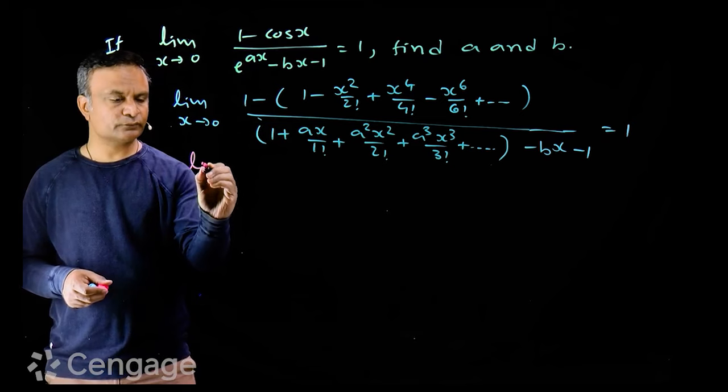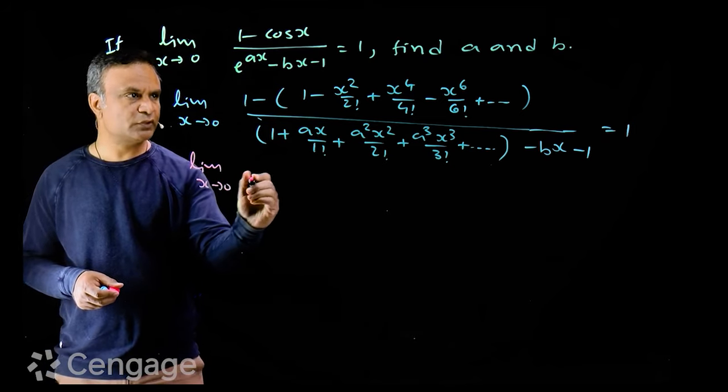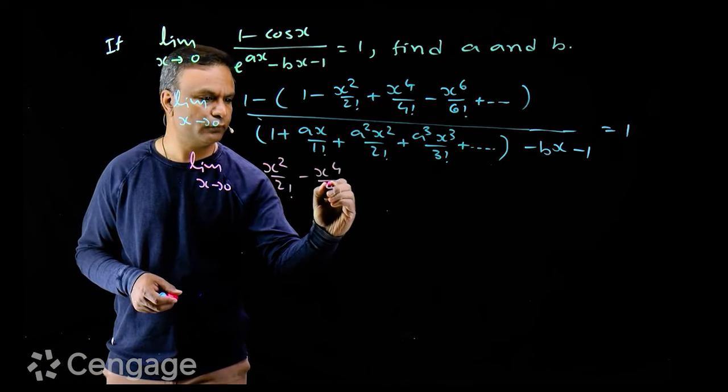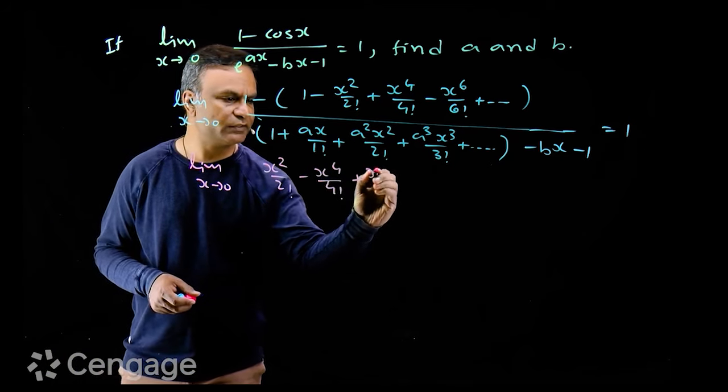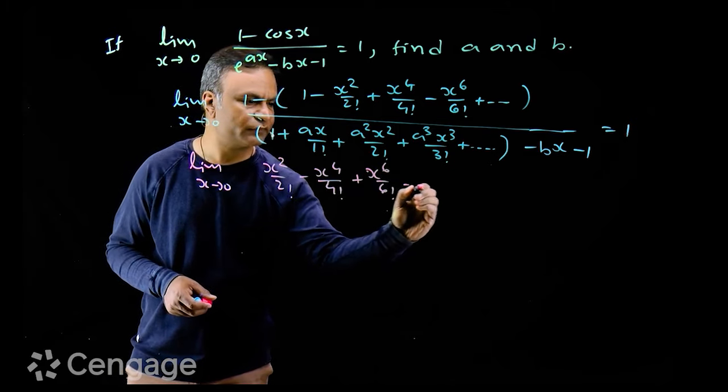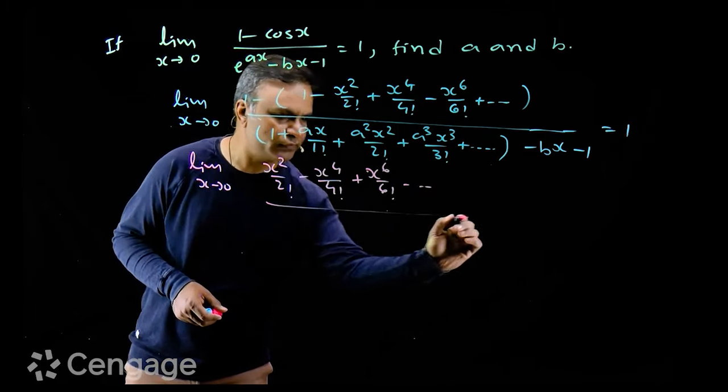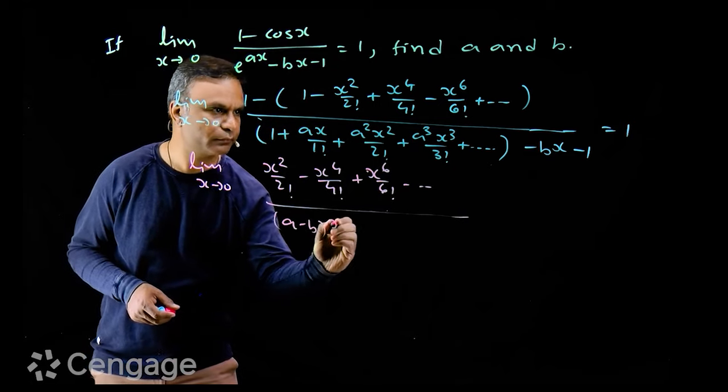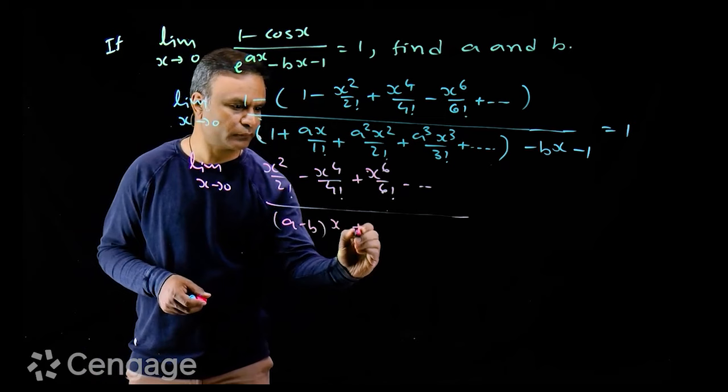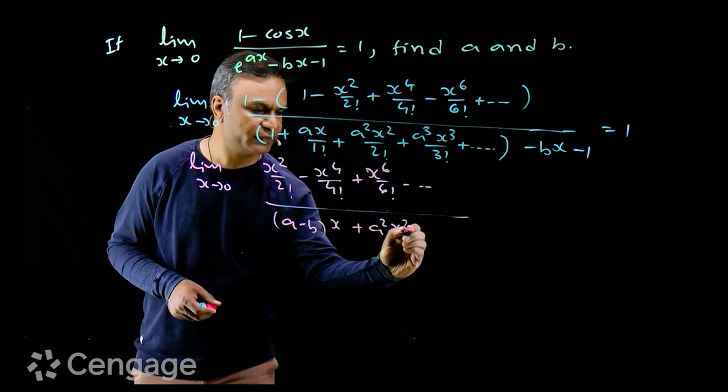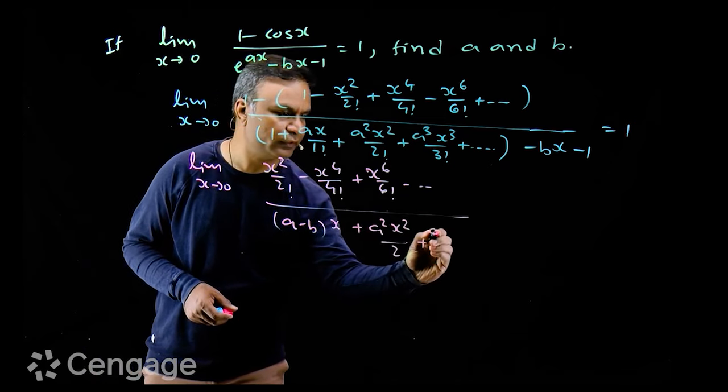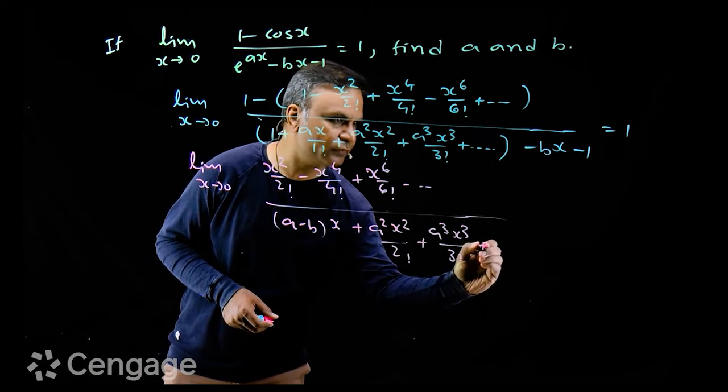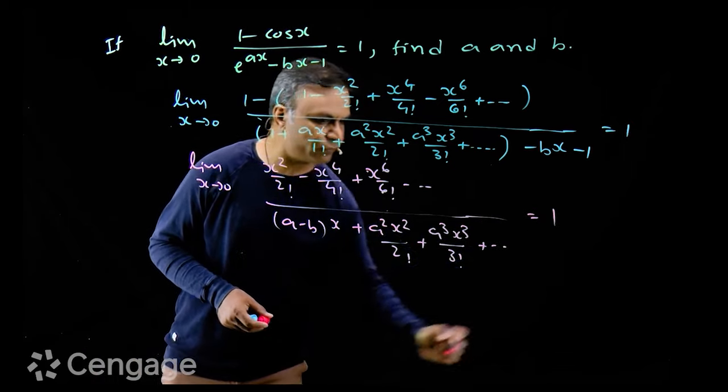So we have limit x tends to 0 of (x²/2! minus x⁴/4! plus x⁶/6! and so on) divided by ((a minus b)x plus a²x²/2! plus a³x³/3! and so on). This is equal to 1.